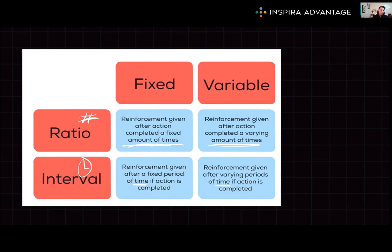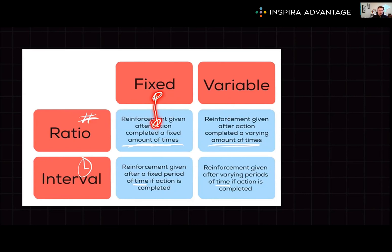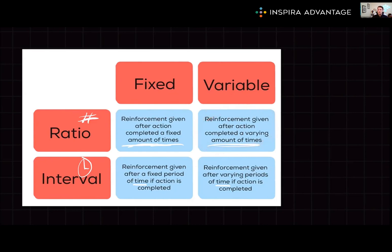Consider what schedule gambling on a slot machine fits into. It can't be an interval because it's not time-based — it's about how many times you pull the lever. And it's not fixed, because with a fixed schedule you'd win every 10 pulls; instead, you could pull once and win or pull 100 times and never win. That sounds like a slot machine. Gambling is a variable ratio, which is one of the most addicting forms of operant conditioning — and the MCAT loves testing this.